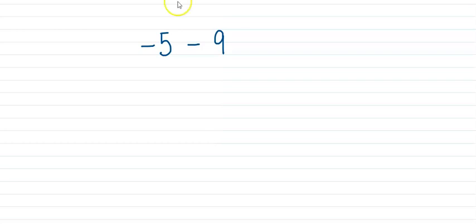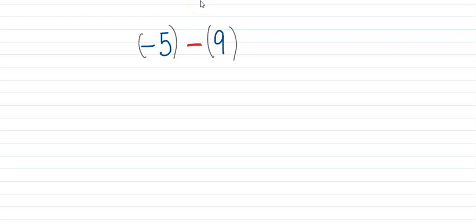We can see that negative 5, and this is the subtraction sign — the minus sign — which is telling us to take away positive 9. If we put the bracket, we understand that we are taking away positive 9 from negative 5.